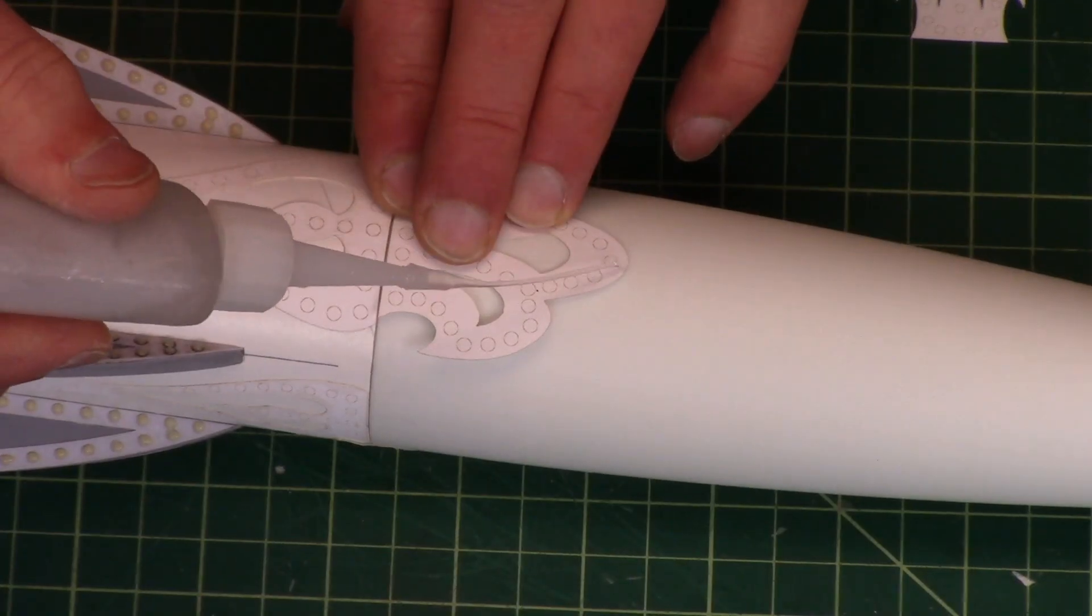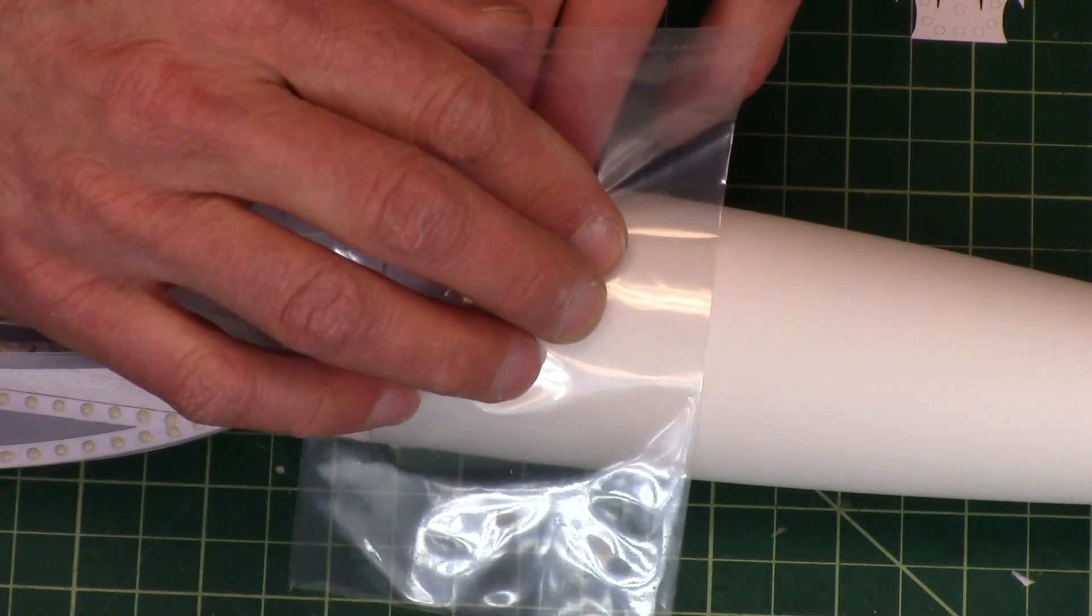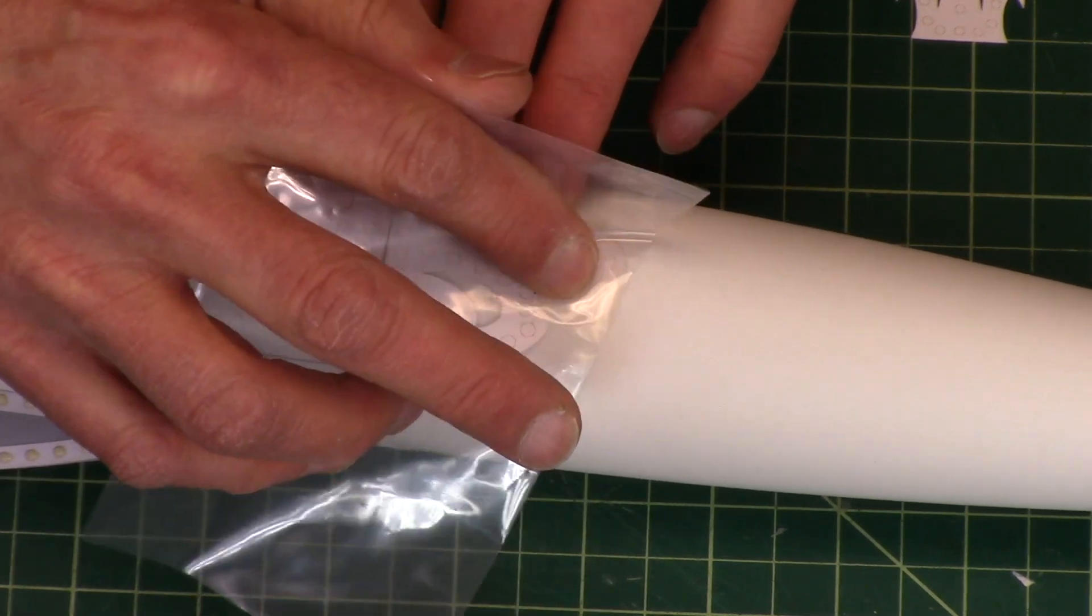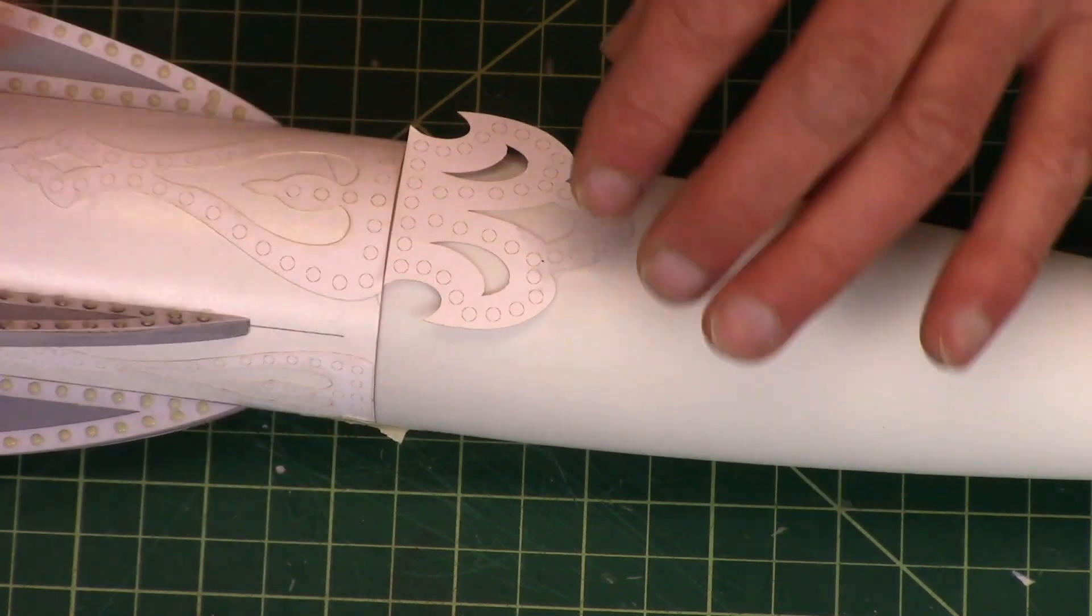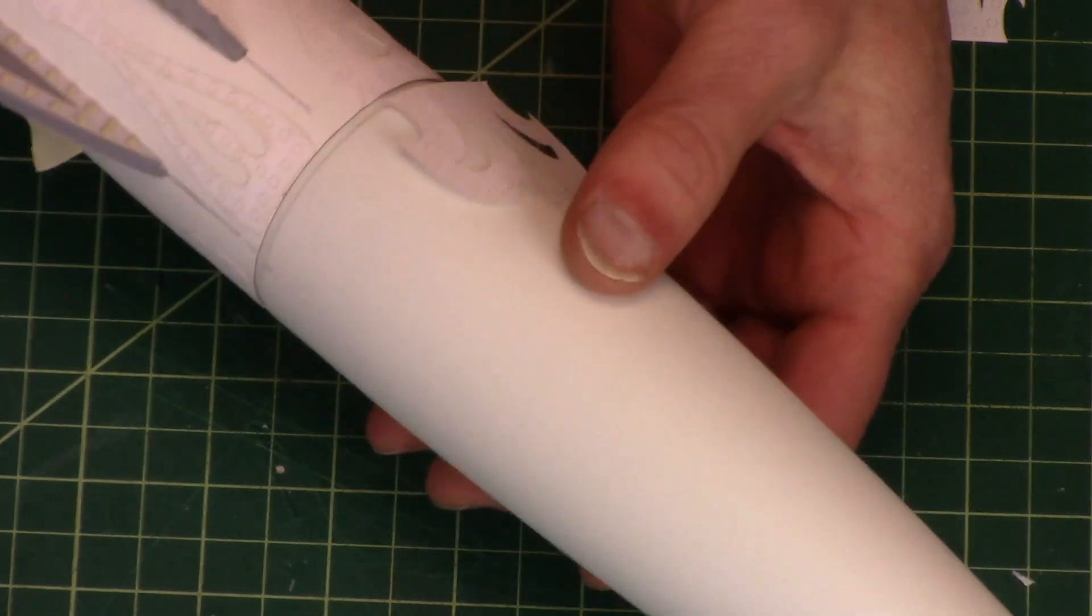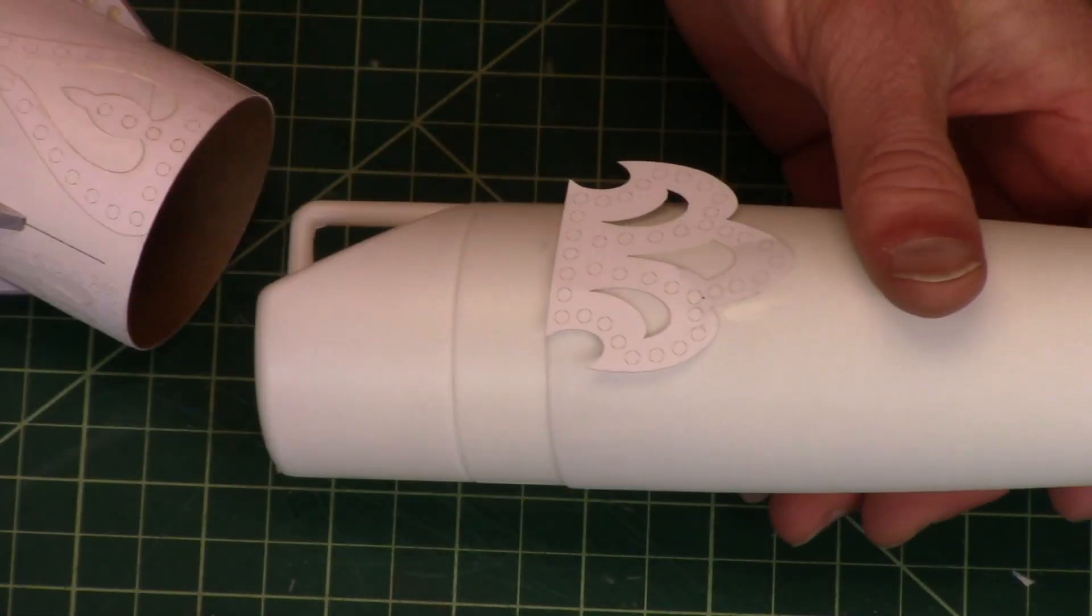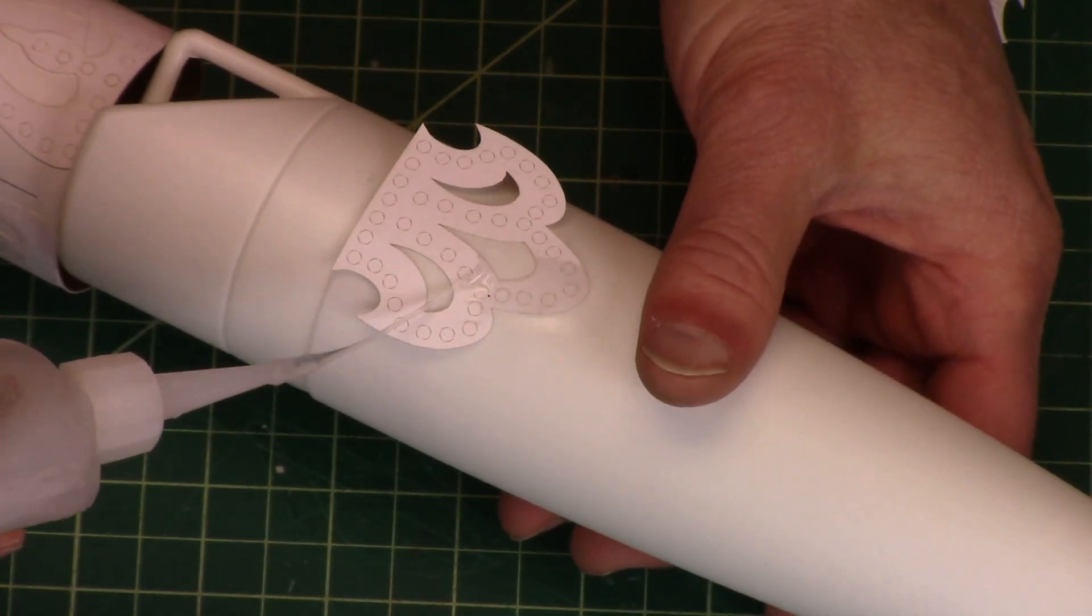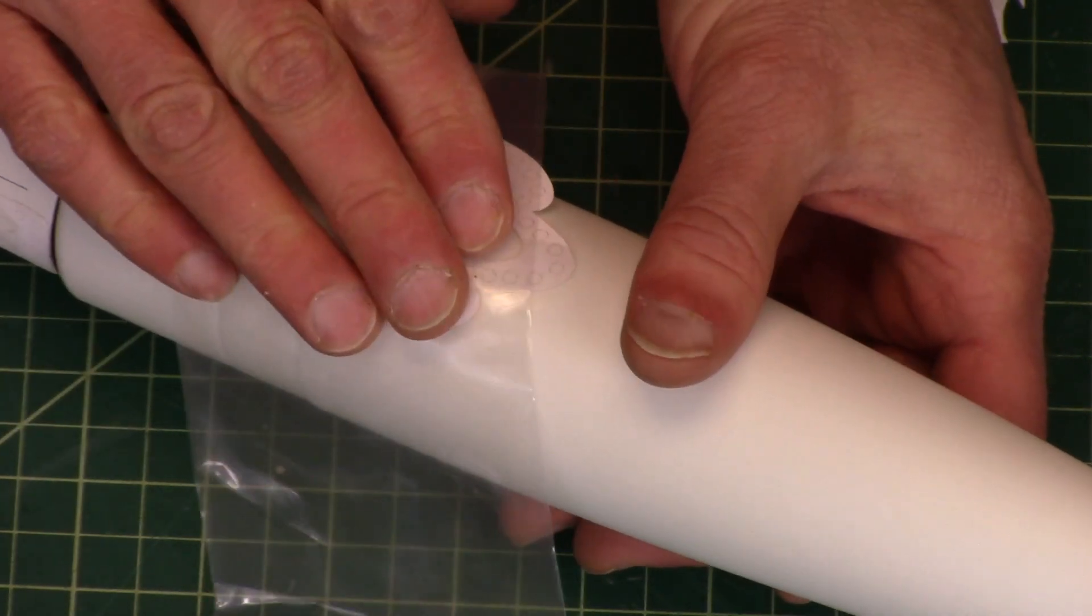Put it on the surface and then press it down with the plastic bag so it doesn't stick to my fingers. Once I got one corner down, it's not going anywhere, I can't move it around. Then I can take that off. I don't want to glue the tube onto the nose cone, so I'll just remove it and then wick it down, press it down.